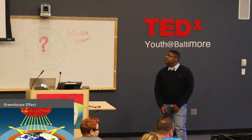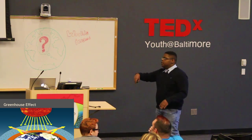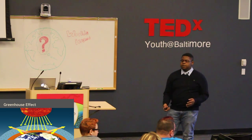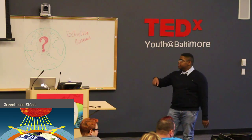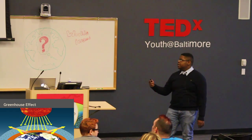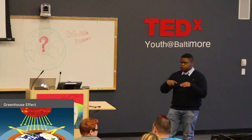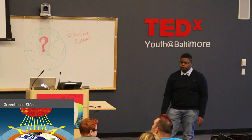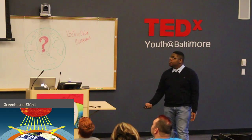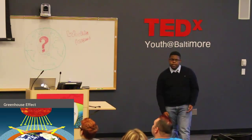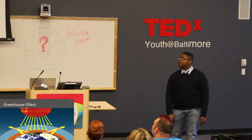As for the greenhouse effect, carbon dioxide builds up in the atmosphere and blocks heat from coming in and out, so the earth is essentially overheating itself, causing higher temperatures and damaging our environment.